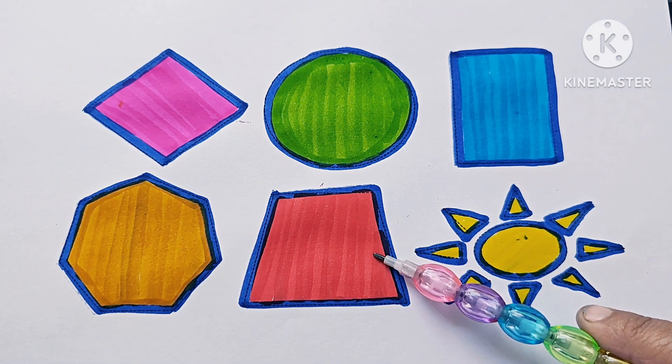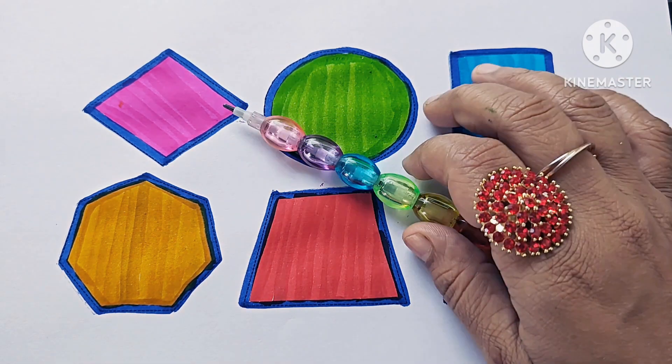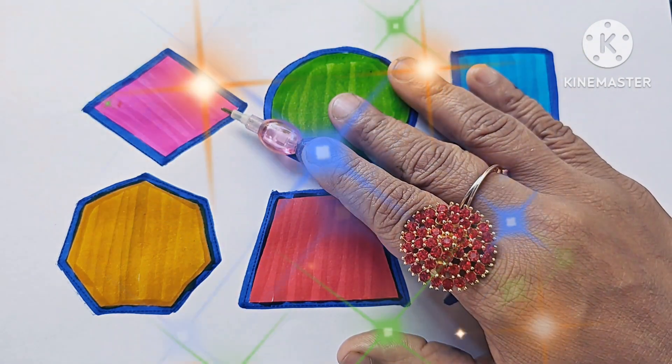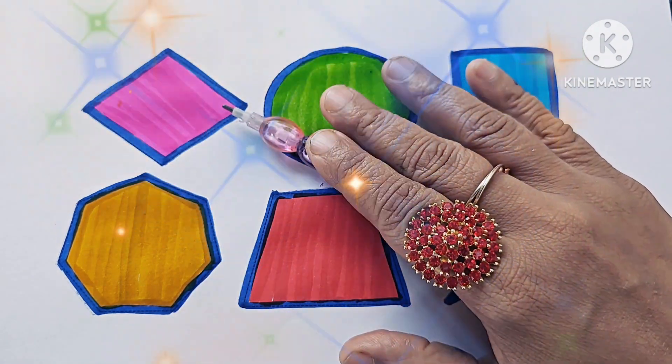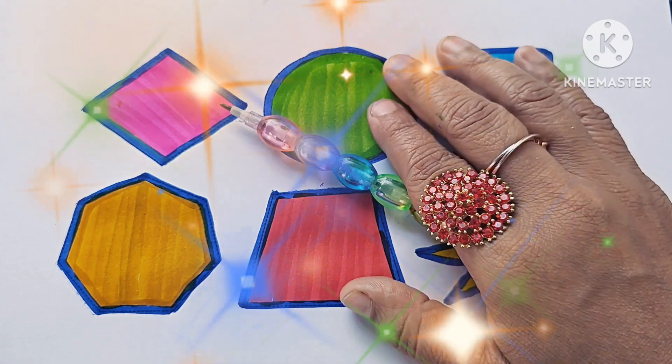Trapezoid, it has four sides. Sun. Thanks for watching this video. Don't forget to like and subscribe. See you in the next video. Bye bye.